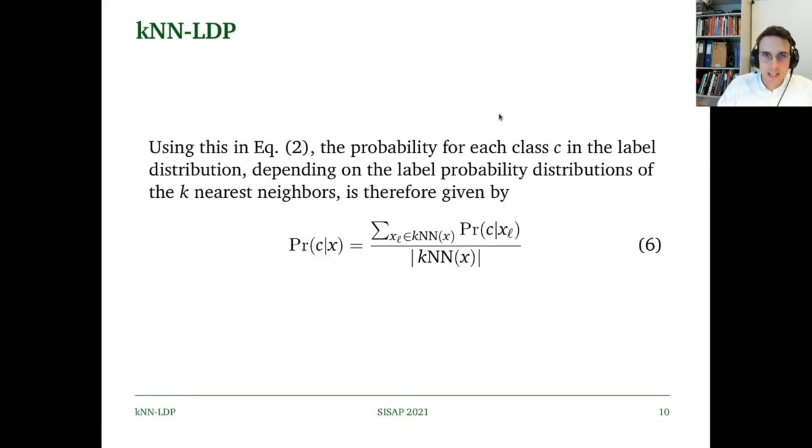Using equation 5 in the proposed general schema gives us equation 6, where the probability of class C given point X is equal to the sum of the conditional probabilities for class C over all of point X's neighbors, divided by the cardinality of the set of neighbors.